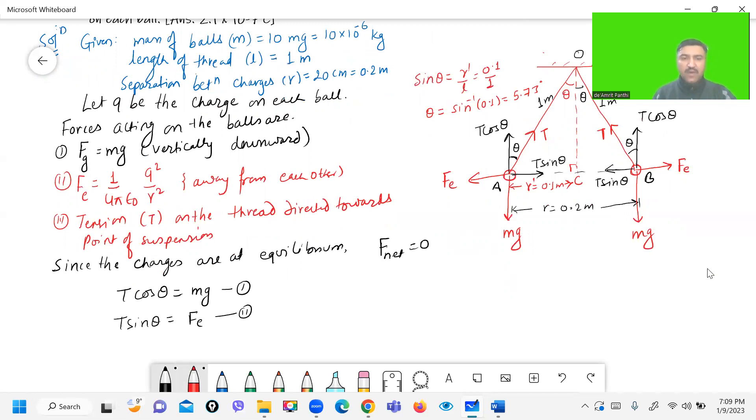Dividing equation 2 by 1, we will get T sin theta by T cos theta equals to, sorry, it's Fe by mg.